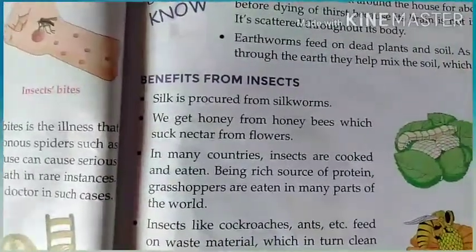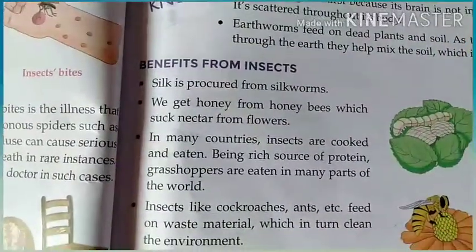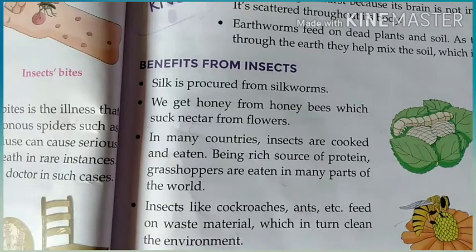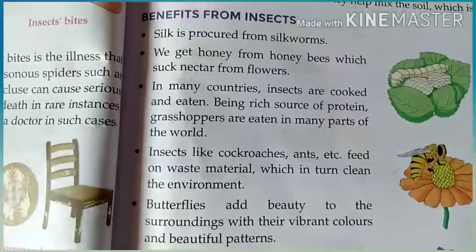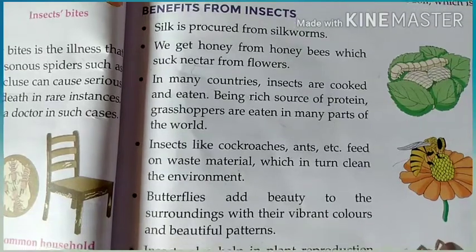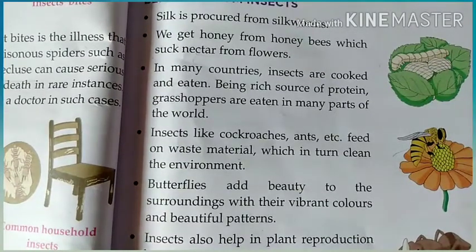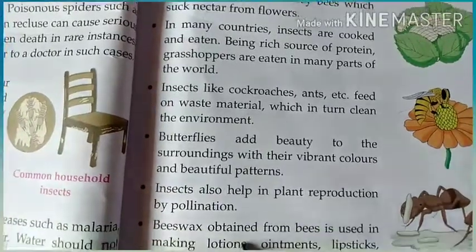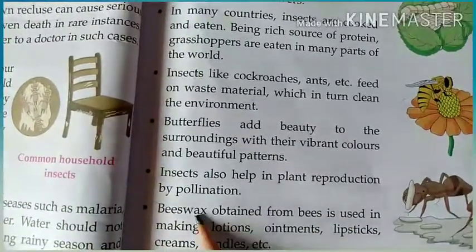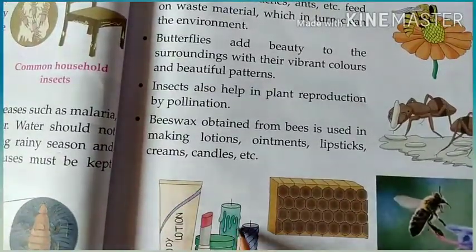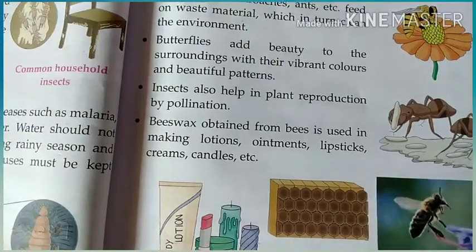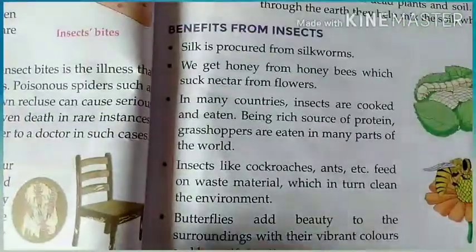We also understand that there are some benefits of insects. We get silk from silkworms and honey from honeybees. In many countries, people eat grasshoppers because they are high in protein. Cockroaches help feed on waste materials. Butterflies add beauty to our surroundings, and insects help in pollination. Beeswax is used in making lipstick, lotions, candles, and more.